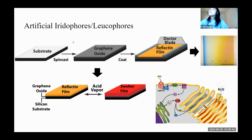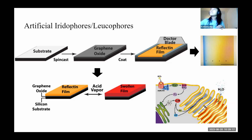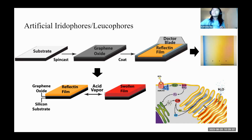These are artificial iridophores and leukophores. Here, we layer graphene oxide with a reflectin film. Reflectin is a protein inside iridophores that enables the cephalopod to reflect light. The reflectin is fabricated onto a film and sandwiched between the graphene oxide and the substrate, creating a similar Bragg reflector-like effect. Using a doctor blade and applying pressure strain to the film creates a color gradient; alternatively, researchers have used a chemical stimulus with acid vapor, which causes the reflectin film to expand and the hue to change.